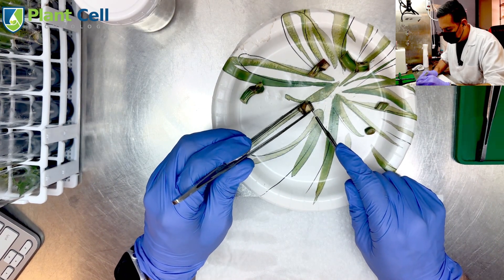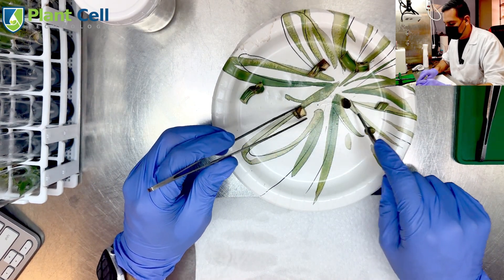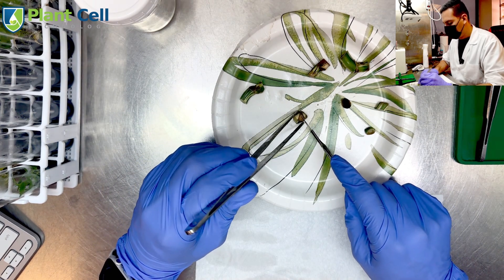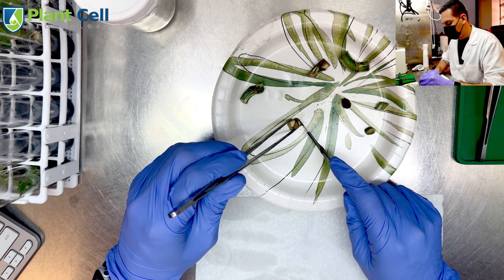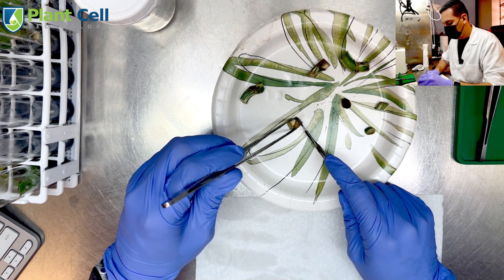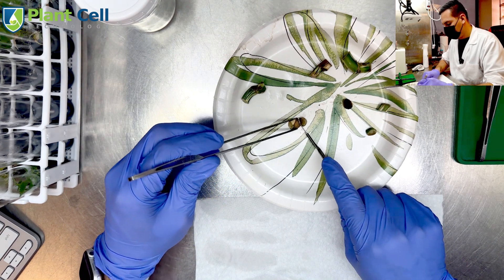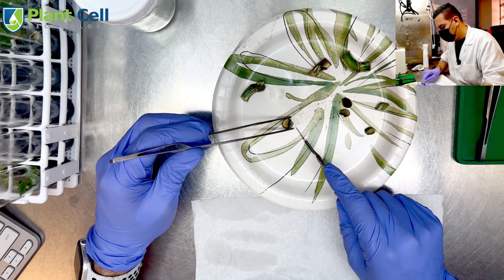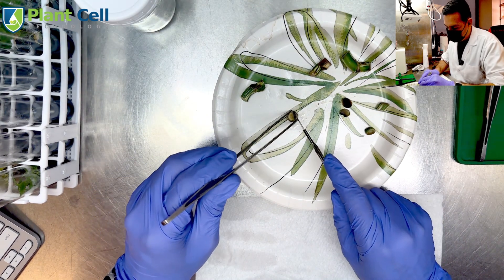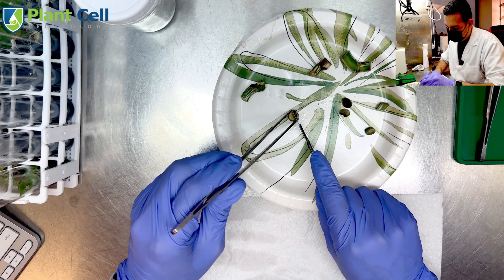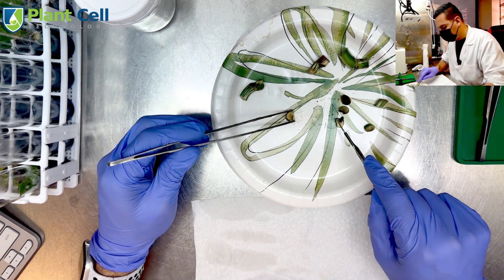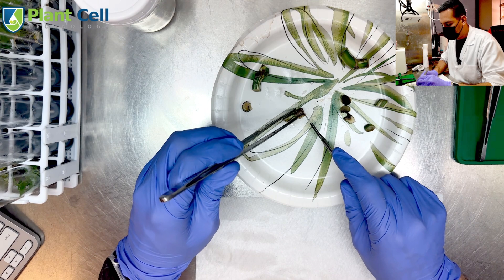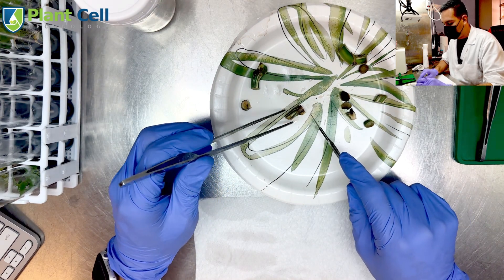This one as well, I'm going to do the same thing. I'm going to cut from both sides where the plant was exposed to the bleach. This helps to prevent some of the phenols coming into the media. Although I already know I'm going to have some phenol problems with this plant, my media has some charcoal that's going to help absorb those phenols.